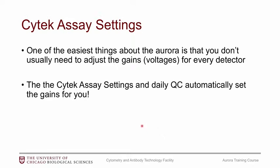The first thing you'll notice when you start using the Aurora is the SciTech assay settings. One thing that was not in the protocol was changing the gains. For the most part, you probably won't need to adjust the gains too much — they're automatically set for you. Gains are essentially equivalent to voltages. We have every user run daily QC at the beginning of their session, and the daily QC will automatically set the gains.